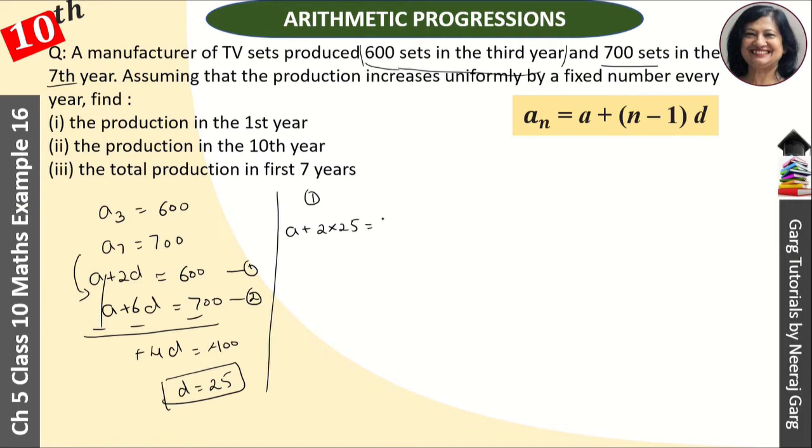Substituting into the first equation: a + 2(25) = 600, so a = 600 - 50 = 550. Now, what was the first part? Production in the first year. So this is our first answer: 550.